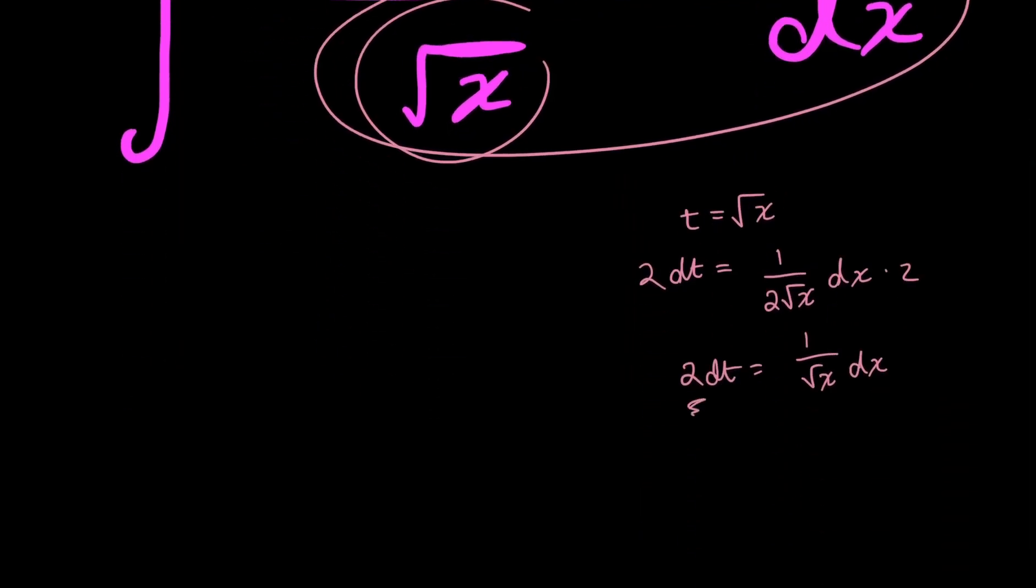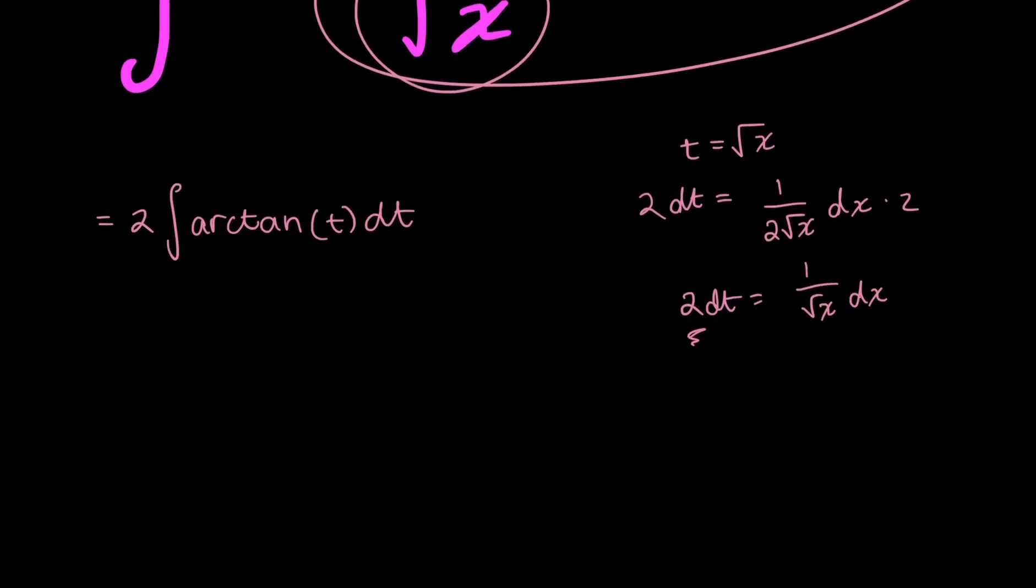So, taking out that 2, I'll have the integral of arctan of t dt. Now, this is relatively easy to solve, and I've actually already done a video on how to integrate arctan of x. You could watch it, because it's much more detailed than what I'm about to explain.